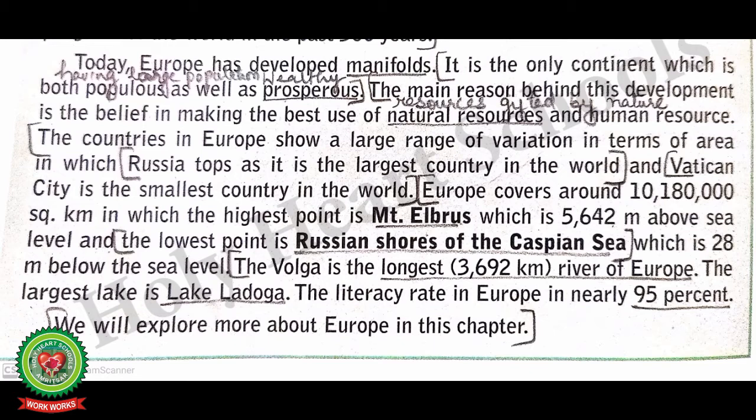Europe has been responsible for significant progress in the world over the past 300 years. Today, Europe has developed in many ways. It is the only continent which is both populous as well as prosperous — populous meaning having a large population, and prosperous meaning wealthy. The main reason behind this development is the belief in making the best use of natural resources and human resources.